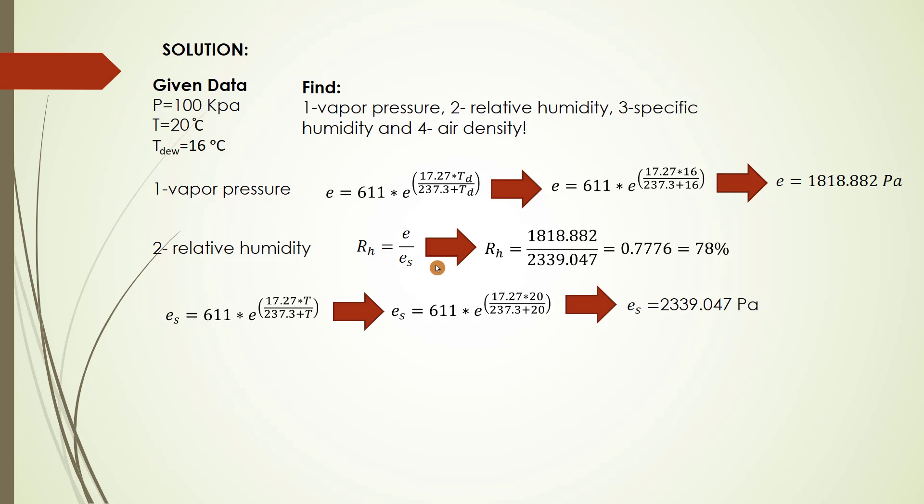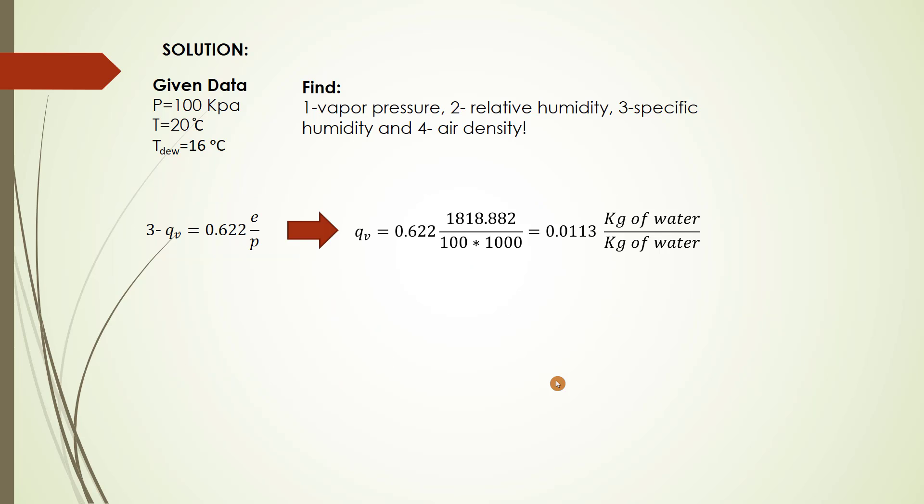Regarding the third one, which is specific humidity, that is the equation of specific humidity, which equals 0.622 vapor pressure divided by air pressure. We have to convert air pressure from 100 kilopascal to pascal. So it equals 0.622 vapor pressure in pascal and air pressure, which equals 0.0113 kg of water per kg of moist air. That is the specific humidity.